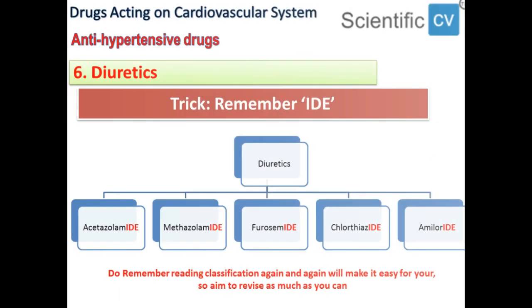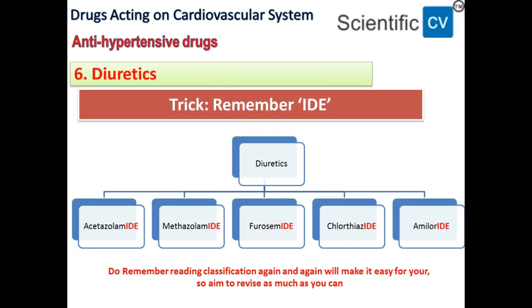The next class is diuretics. The trick to remember is '-ide'. The drugs are acetazolamide, methazolamide, furosemide, chlorothiazide, and amiloride. The trick to remember this class of drugs is the suffix '-ide'.